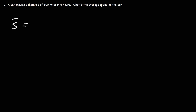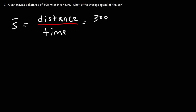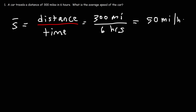Let's work on some practice problems. A car travels a distance of 300 miles in six hours. What is the average speed? Using the formula: average speed equals distance divided by time. The distance is 300 miles and the time is 6 hours. 300 divided by 6 equals 50 miles per hour. So the average speed is 50 mph.